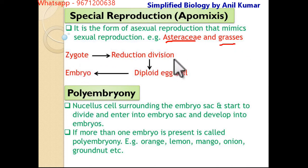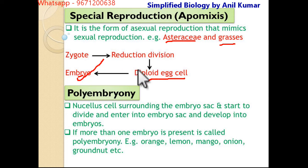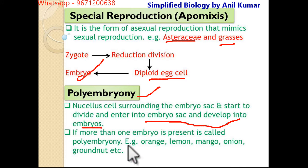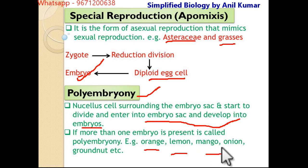In apomixis, the zygote undergoes reductional division to form a diploid axel, and that diploid axel forms the embryo. Another concept is polyembryony — when more than one embryo is formed in the embryo sac. Nucellus cells surround the embryo sac, start to divide, enter into the embryo sac, and develop into an embryo. If more than one embryo is present, it is named polyembryony. Examples include orange, lemon, mango, and onion.